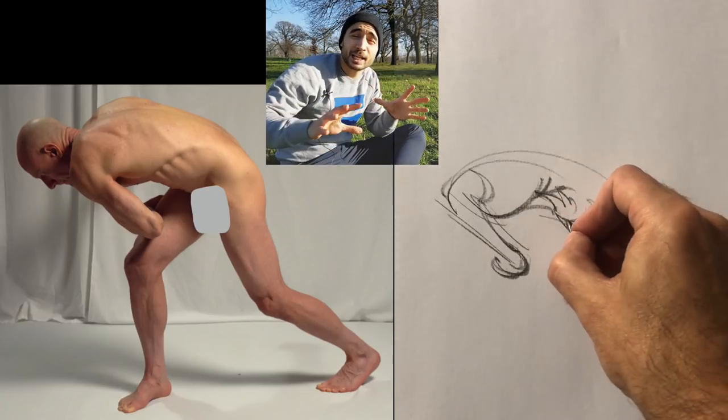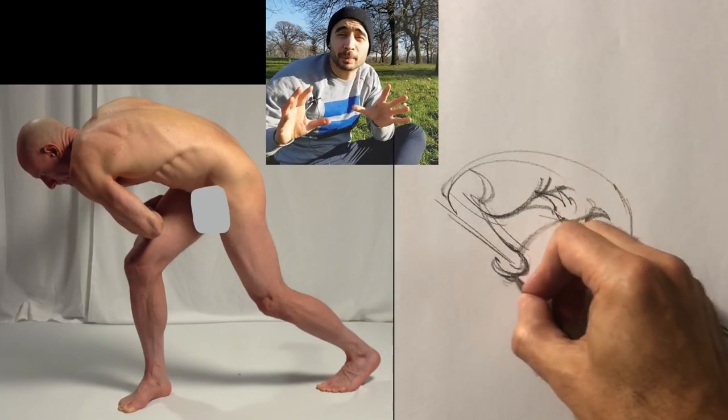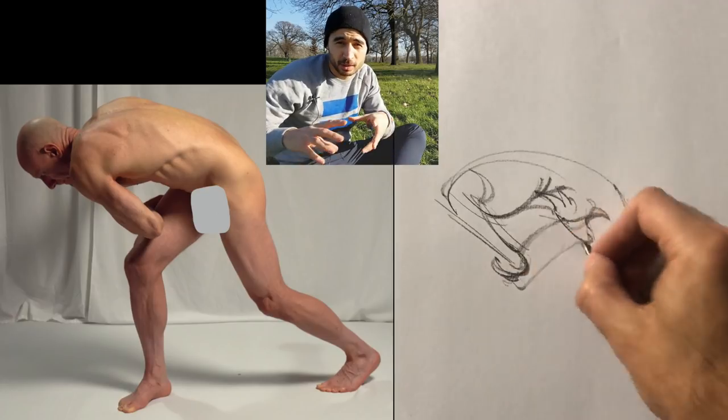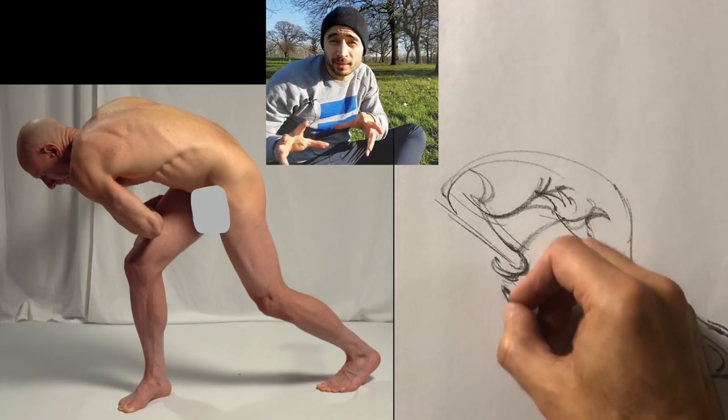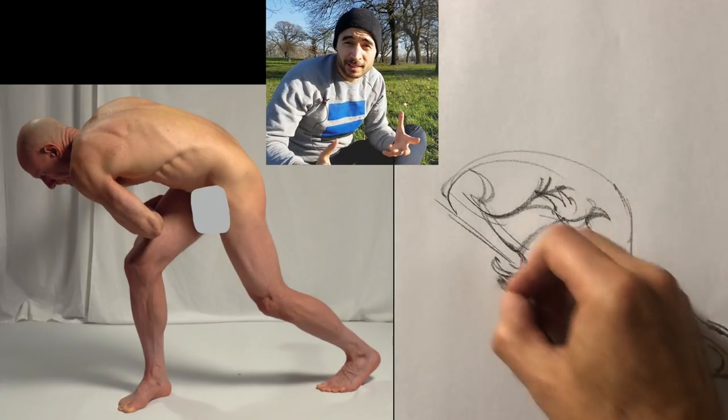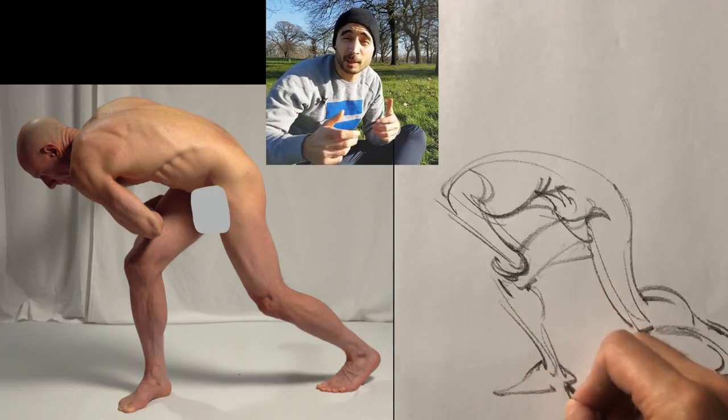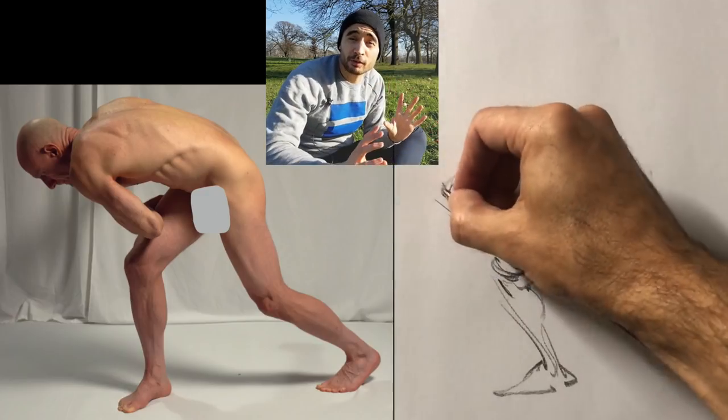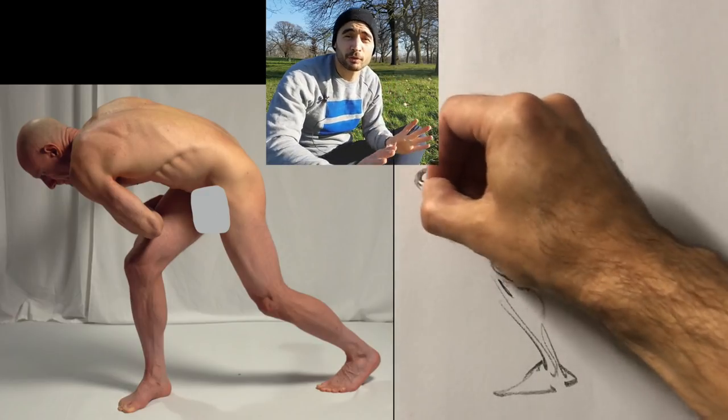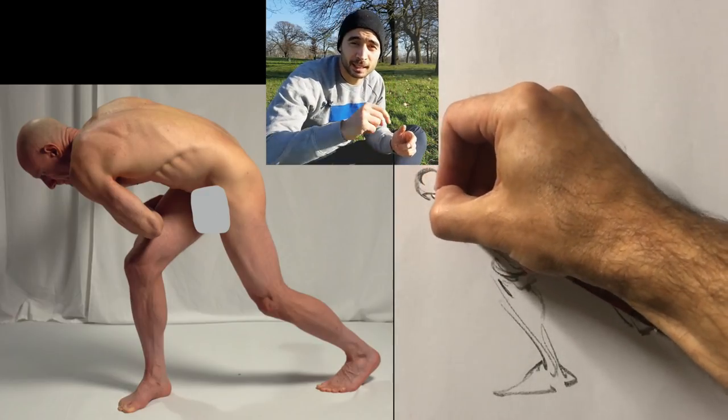And he added some indication this time of some of the bigger muscles or groups of muscles. So there's some indication of the quads. He doesn't use too many lines, so the fact that he's decided that these muscles are important enough to have lines mean something. The musculature of this model is important enough to get some lines in this pose.